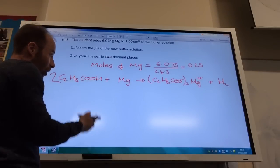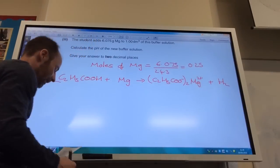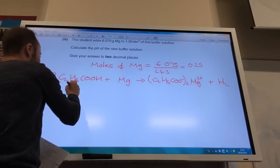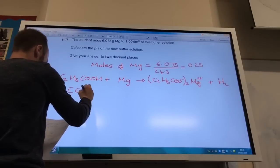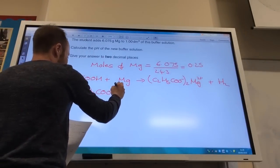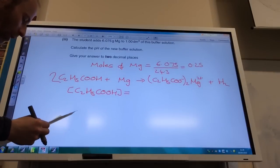So I need to work out my concentration of propanoic acid and the propanoate ion to be able to work out my buffer. So my concentration of C2H5COOH. It was one mole per decimeter cubed.